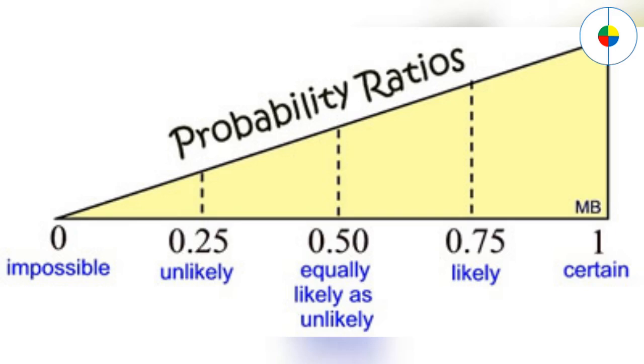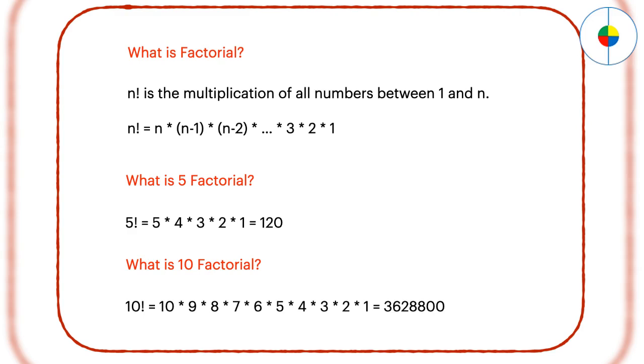Permutation and combination are very useful to calculate probabilities. Here is an important mathematical operation factorial, which is the multiplication of all numbers between 1 and n.